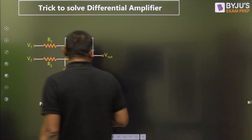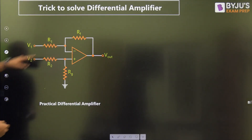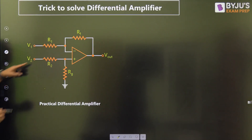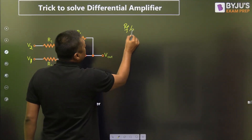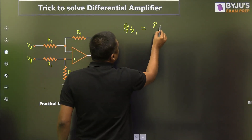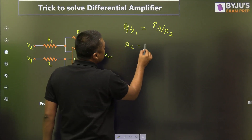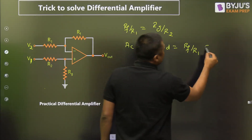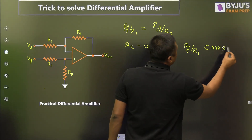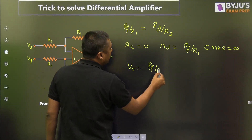Always check this ratio first before solving the question: RF/R1 equals RG/R2. Here V1 and V2 are the inputs. This is called the balanced bridge condition. If that condition is satisfied, then directly you can say A_C equals 0, A_D equals RF/R1,